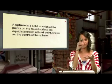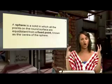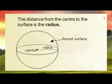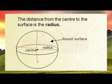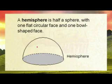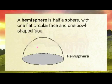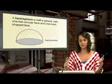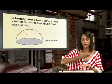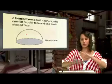Equidistance means the middle of the sphere — that fixed point. If you measure any point from the middle to the top, to the bottom, to the sides, all of those distances are equal from the middle outwards. So the distance from the center to the surface is known as the radius. A hemisphere is half of a sphere, with one flat circular face and a curved bowl-shaped face.